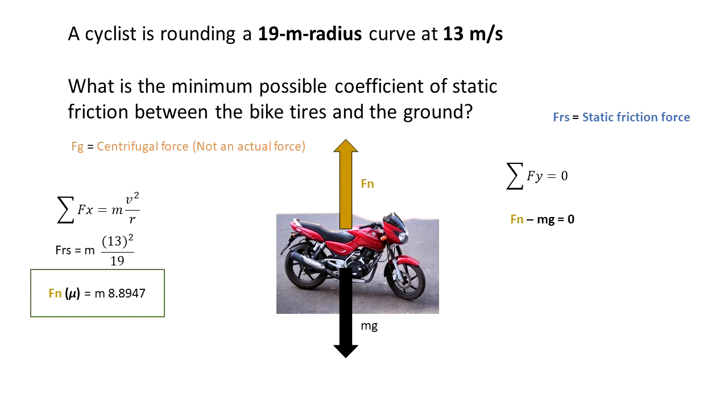So Fn minus mg is equal to zero, and we know that Fn is equal to mg.